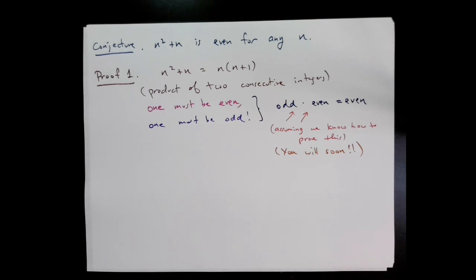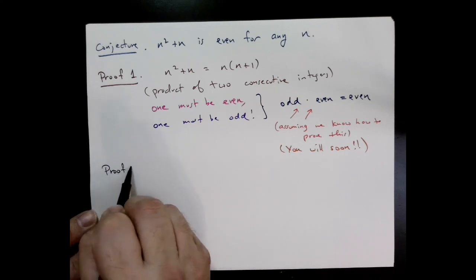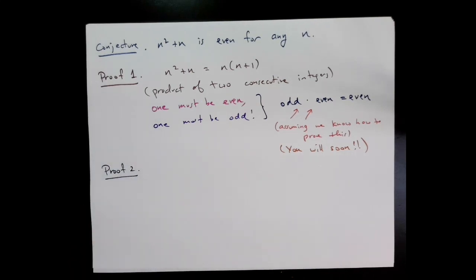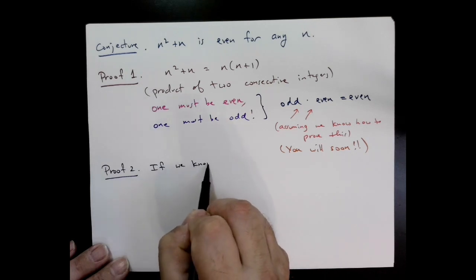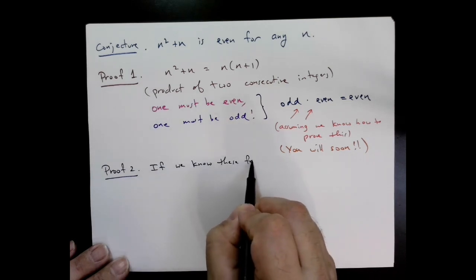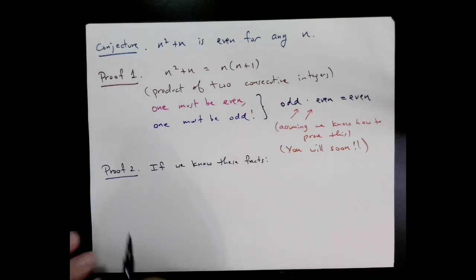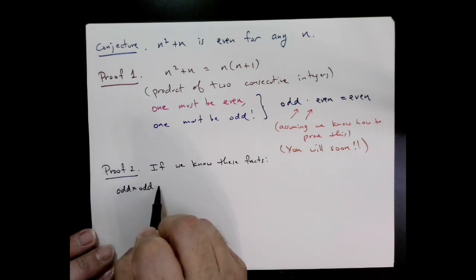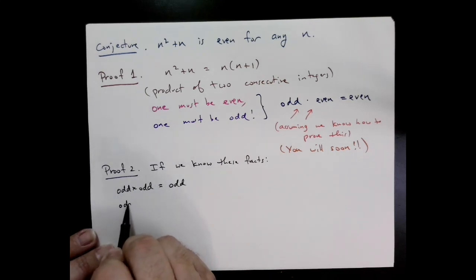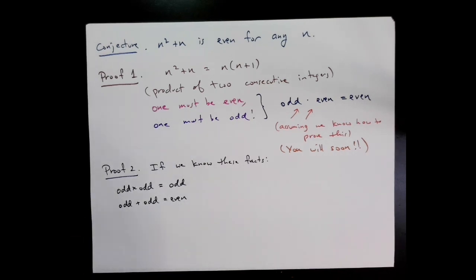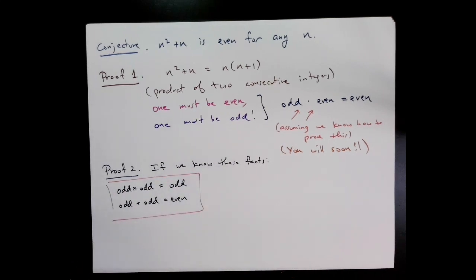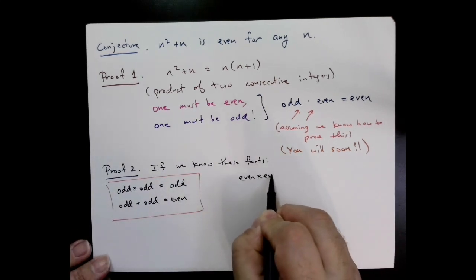Another completely different proof is if we happen to know even more facts, we don't actually have to do the factorization. More generally, we could just attack this head-on if we know the following facts: odd times odd is odd, odd plus odd is even, even times even is even, and even plus even is even. Again, if it's not obvious to you that those are true, we're going to work with these very much. By the end of this course, these rules will be very clear in your head.